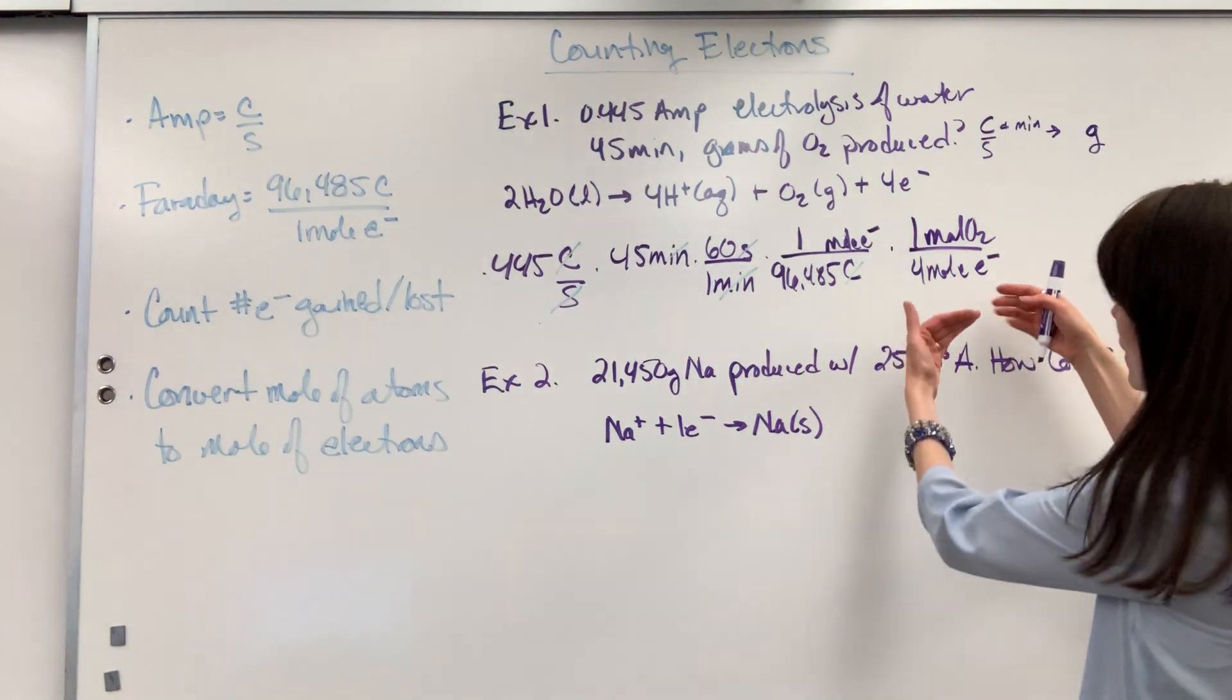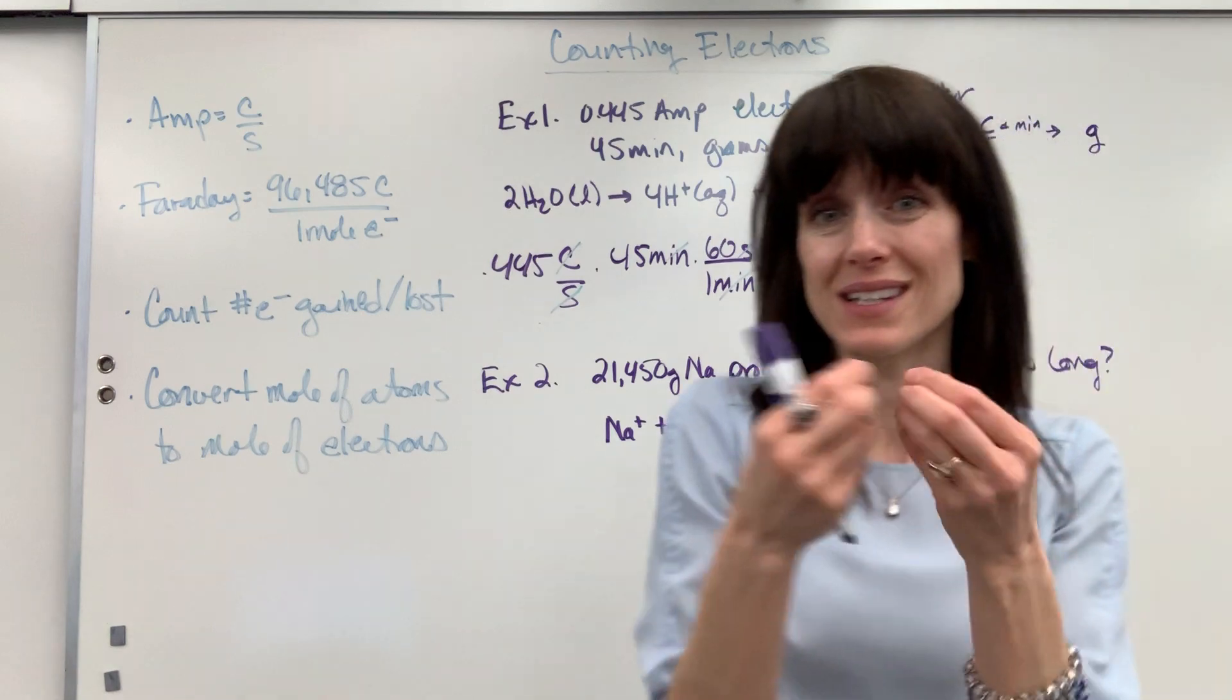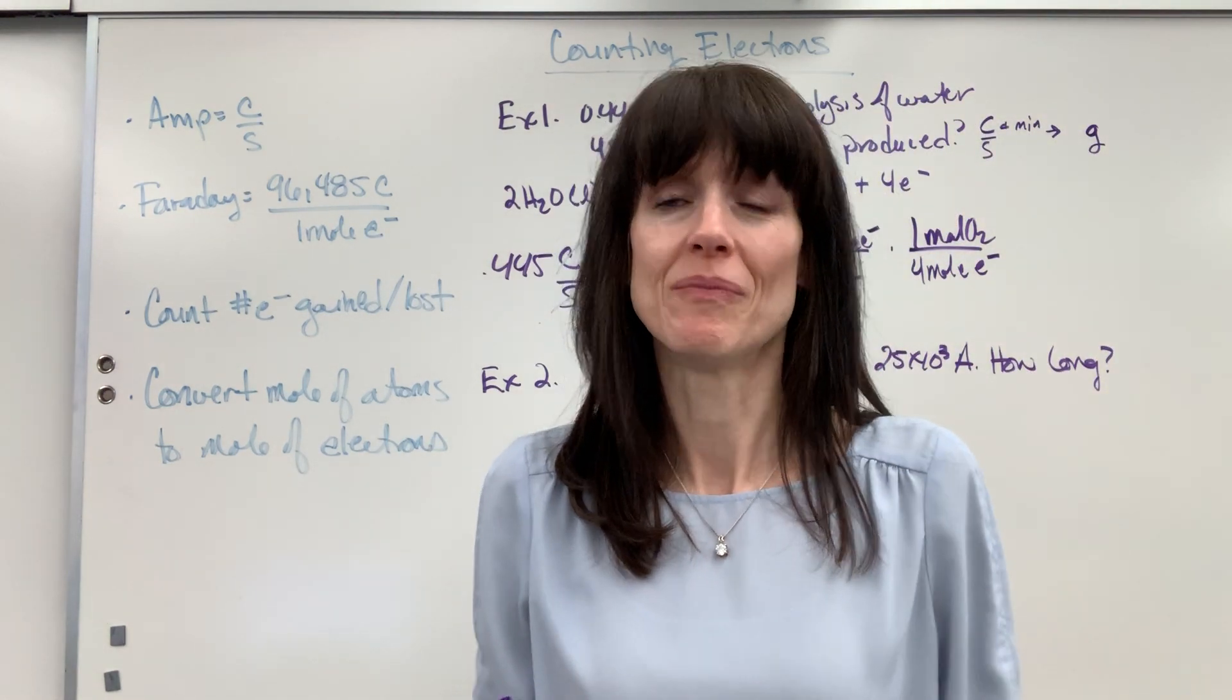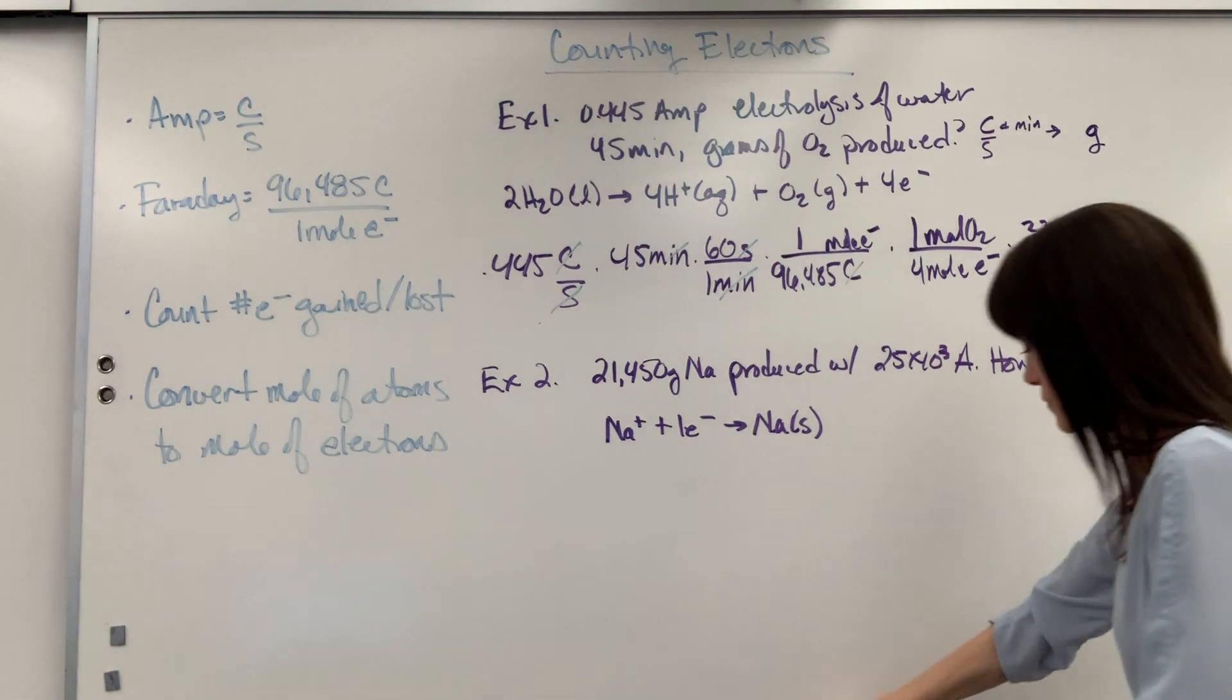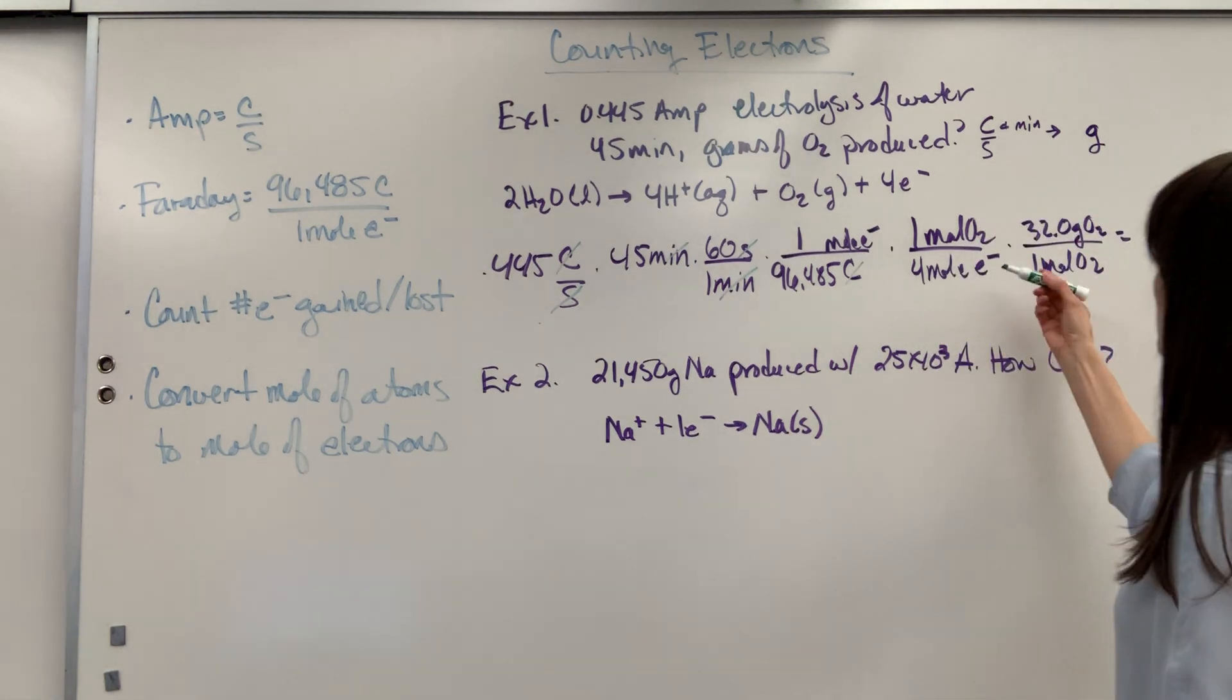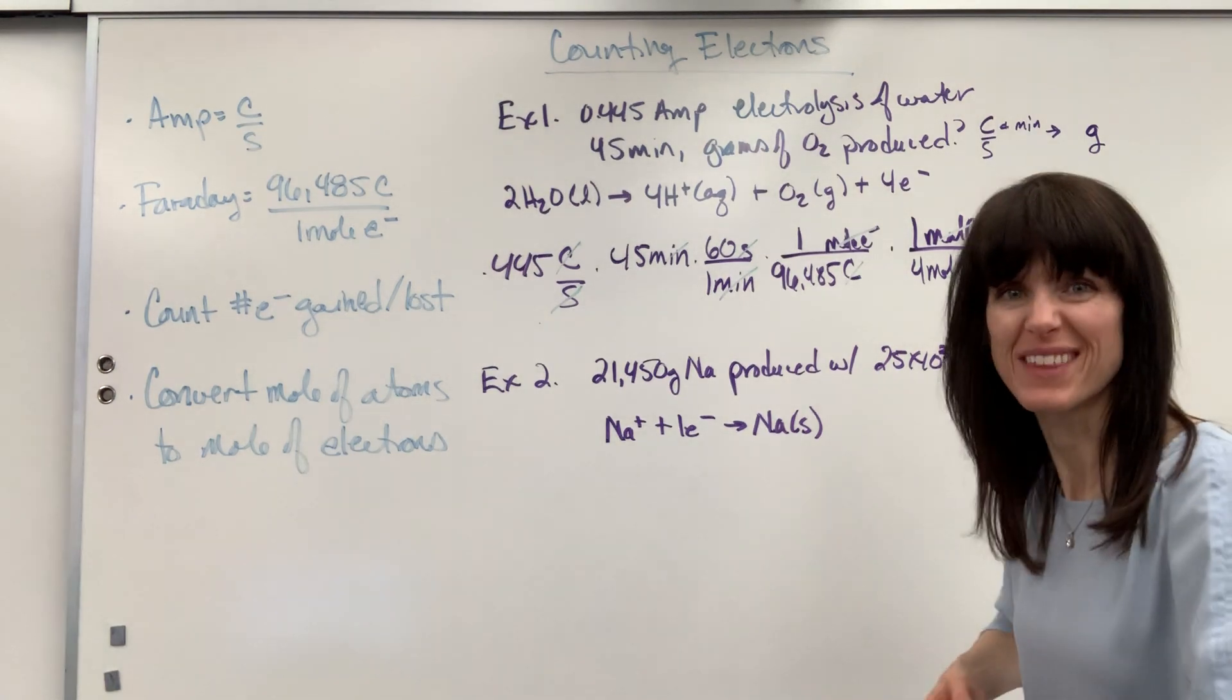Very cool. Look at what we did. We walked. We moved from moles of electrons to moles of actual substance. So, now I have moles of oxygen. Now, all we have to do is bring this to grams. One mole of oxygen is 32.0 grams of oxygen. And look at what cancels. Mole of electron is gone. Mole of oxygen, mole of oxygen. And what are we left with? Yay! Grams. Grams of oxygen.